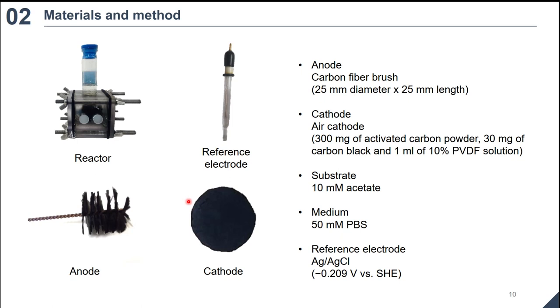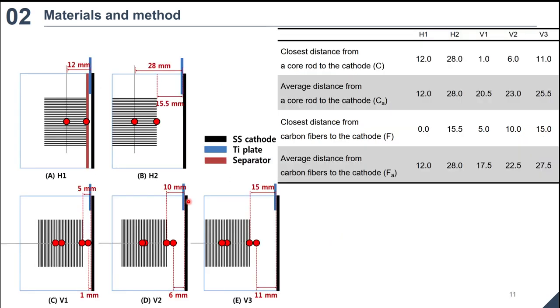Medium for MFC operation contained 10 millimol of sodium acetate in the 50 millimol phosphate buffer solution. Ag/AgCl reference electrode was installed very closely to the bioanode and used for electrochemical measurement. To investigate influence of relative configuration of an anode to a cathode on performance in electrochemistry of MFC, five different anode configurations were tested. The anode core rod was placed horizontally to the cathode in 12 mm H1 and 28 mm H2, and vertically to the cathode in 1 mm V1, 6 mm V2, and 11 mm V3. The same bioanode was used throughout the experiment.